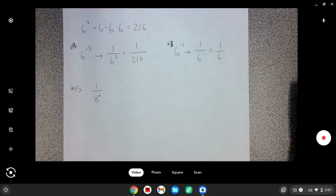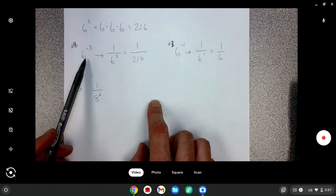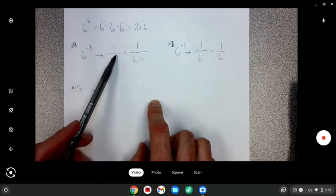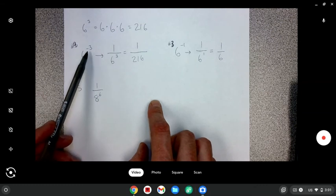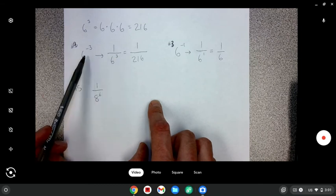Okay, so we got one over eight to the sixth power. And if we work backwards here, whatever's in the denominator, whatever's in the bottom of that fraction, I can put that as a negative exponent.